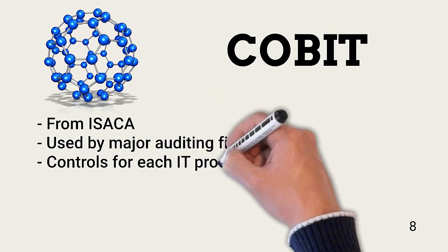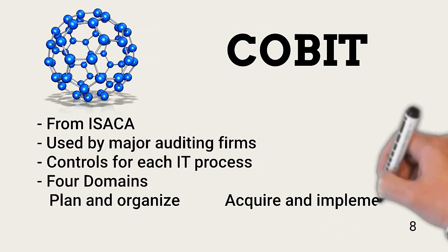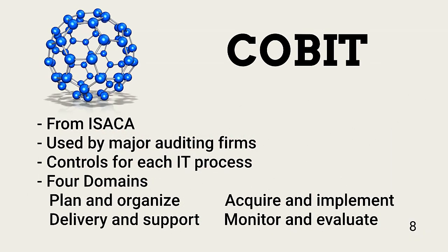ISACA COBIT is a business framework for the governance and management of enterprise IT. It's used as the standard for third-party audits by the major accounting firms. COBIT provides detailed guidance over four domains: plan and organize, acquire and implement, delivery and support, and monitor and evaluate. If your organization is subject to Sarbanes-Oxley audits, you are very likely to be audited in accordance with the COBIT framework.